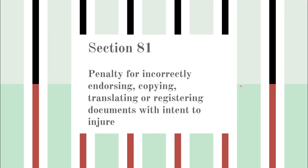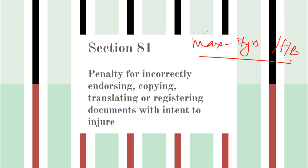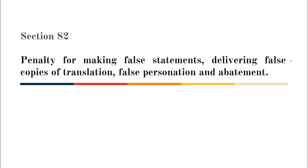Section 77 covers suits in case of order of refusal by registrar under section 72 or 76. Any person can institute a civil suit within 30 days from the date of the order of refusal, in the court where the property is located. Sections 81 and 82 cover penalties. Section 81 states that any registering officer or person employed who has a duty to endorse or register and causes injury will face maximum 7 years punishment or fine or both. Section 82 penalizes making false statements, delivering false copies or translations, false personation, and abetment — the same punishment applies.